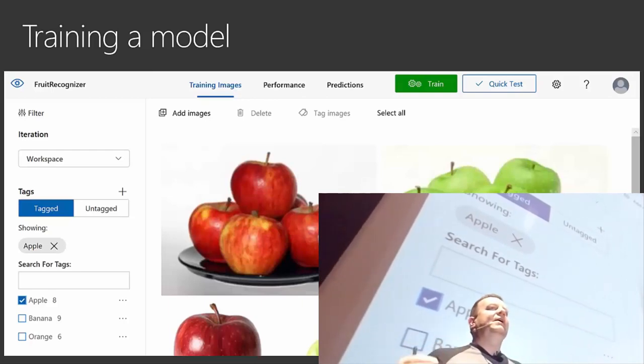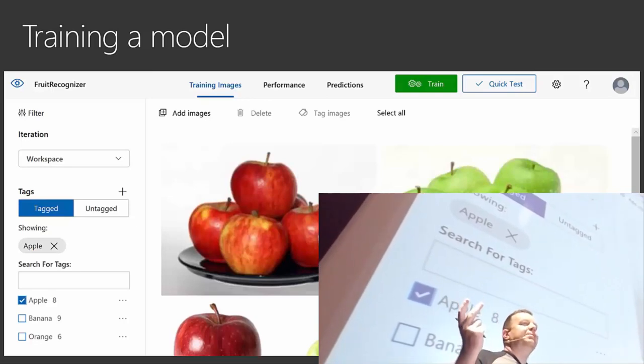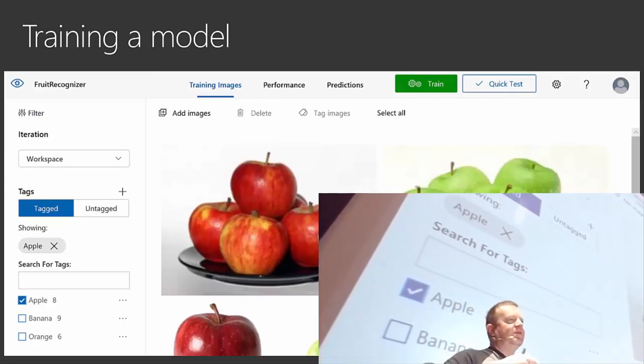So in my demo, I train the model with apples and oranges. I submit a test picture of an orange, it tells me that's an orange, great.